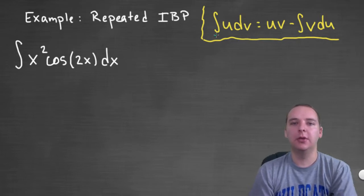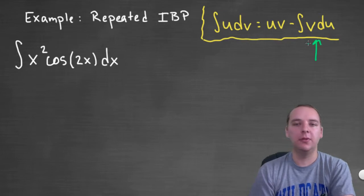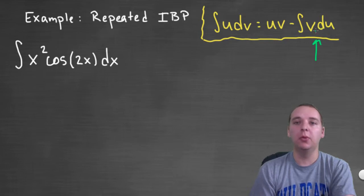What happens is you have an integral of u dv as we all know, and it equals u times v minus the integral of v du. Now what I want to look at is this guy, the integral of v du. Often times this integral does become simpler and we compute it and we're done.